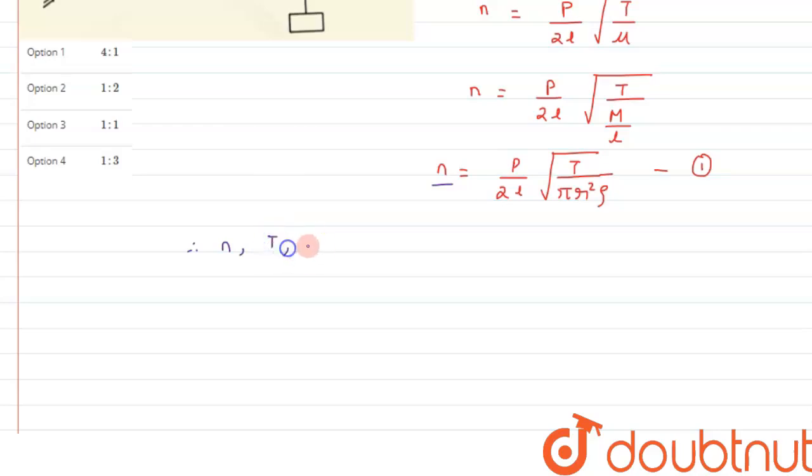We can write from here n, tension in the wire, radius, and length remains constant. So we can say these quantities remain constant. Therefore, we can have a relation P by under root rho, where P is the number of loops and rho is the density, will be a constant.